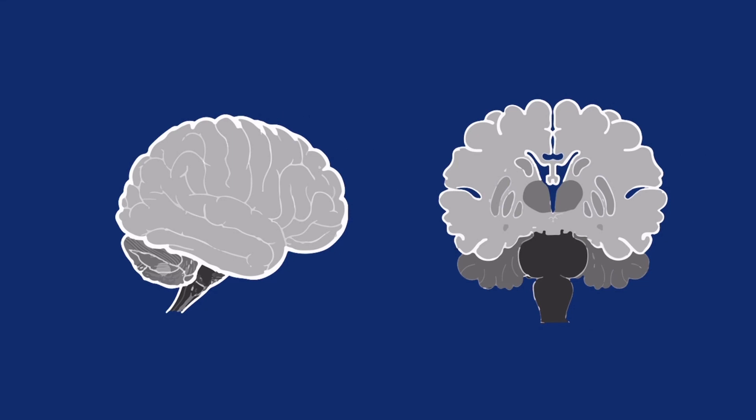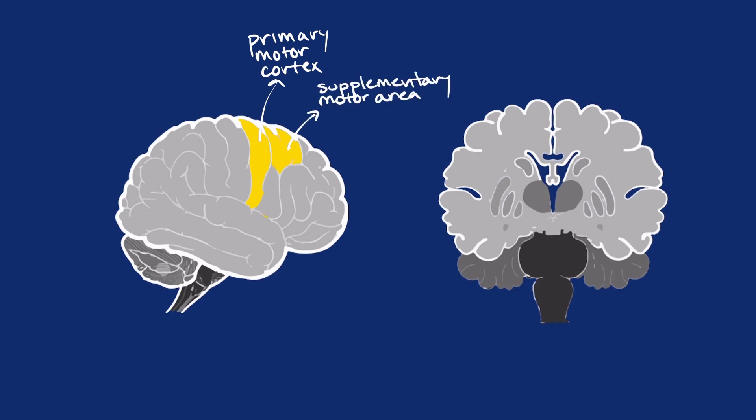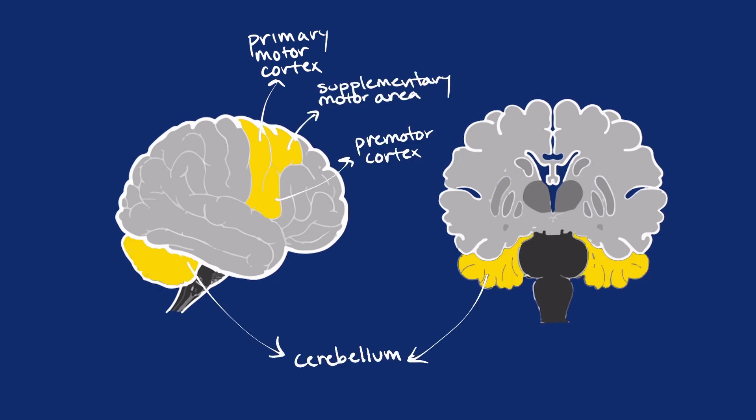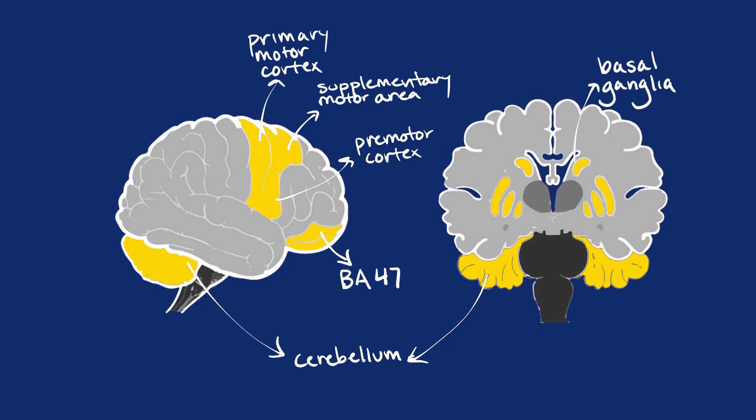Perceptual entrainment involves a large network of brain areas, including motor areas like the primary motor cortex and supplementary motor area, the cerebellum which helps coordinate movement, and the basal ganglia which regulates movement. In fact, our ability to perceive and follow rhythm cannot be separated from our motor functions — rhythm and motion are intrinsically tied together. The temporal anticipation aspect of rhythm is believed to involve Brodmann area 47, in the frontal lobe.